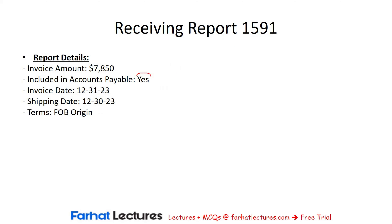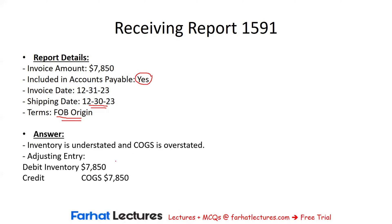For receiving report 1591, it was included in accounts payable. The terms are FOB origin, and the goods were shipped on December 30, 2023, meaning they are correctly included in accounts payable. However, they were not included in inventory, so the adjusting journal entry includes a debit to inventory for $7,850 and a credit to cost of goods sold for $7,850, because the purchase transaction was recorded but the last journal entry did not include a debit to inventory, which overstated cost of goods sold under the periodic inventory system.